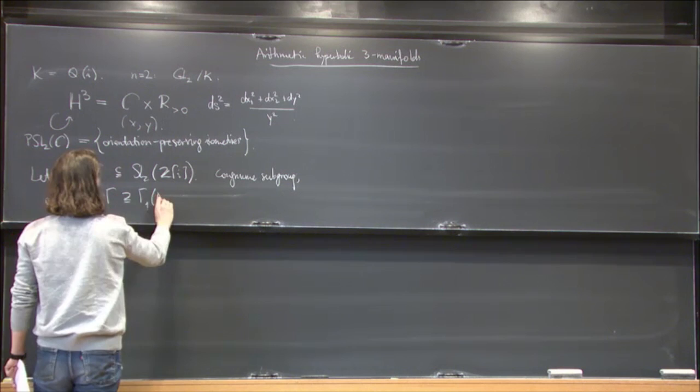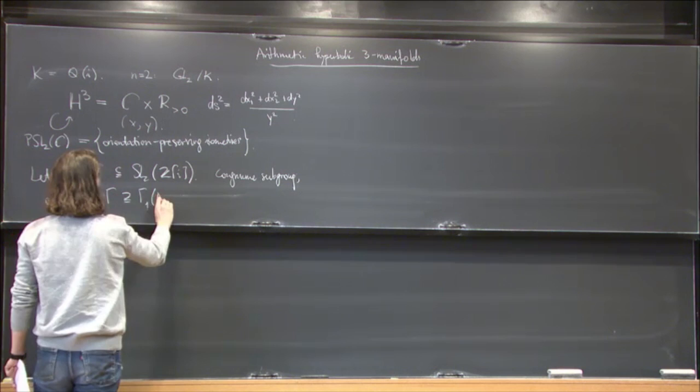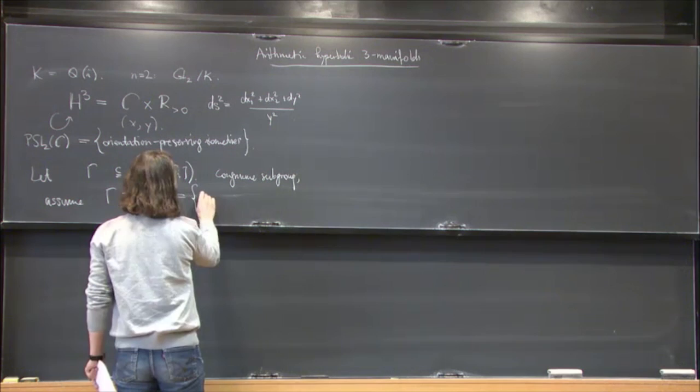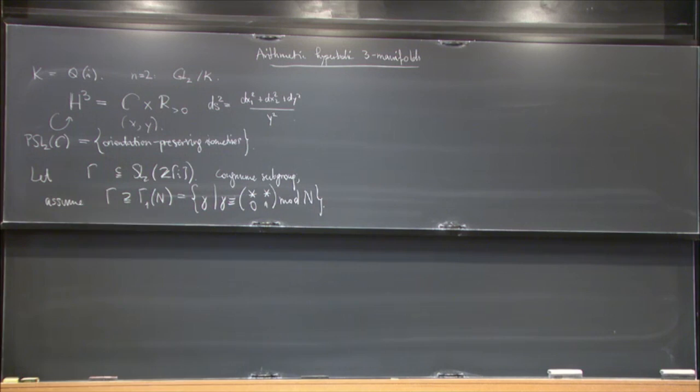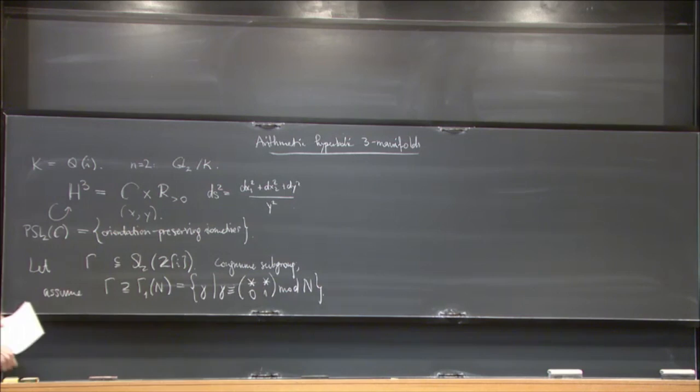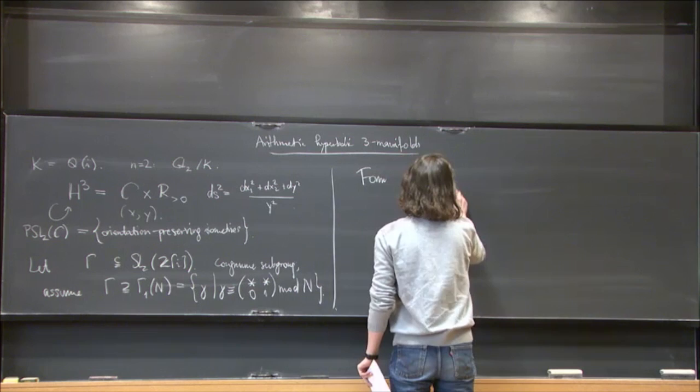And in fact, for some very small technical reasons, I will assume, as I did later on last time, that actually contains a congruent subgroup of the form gamma 1 of n. So again, these are the matrices which are congruent to a matrix of this form, modulo n. And then we form this locally symmetric space, which is H3 mod gamma.